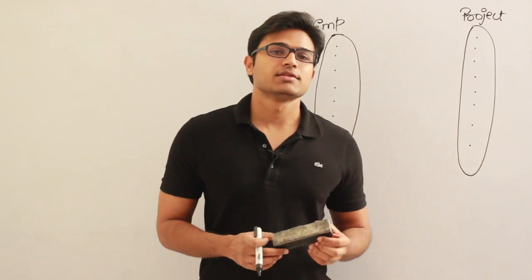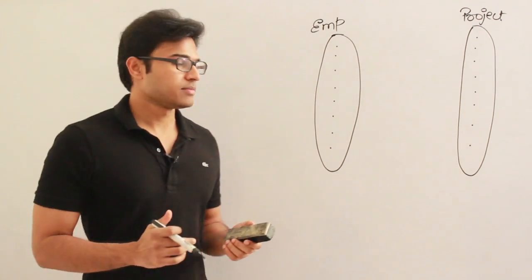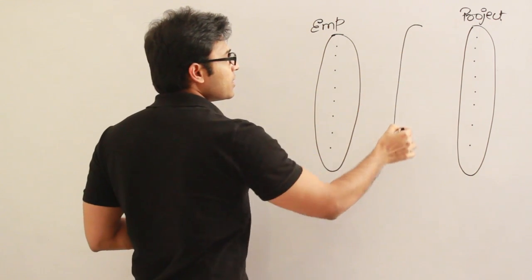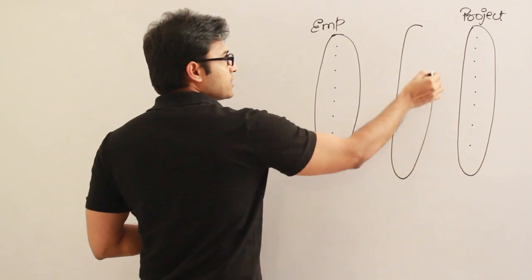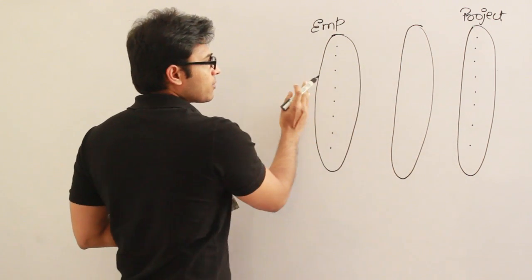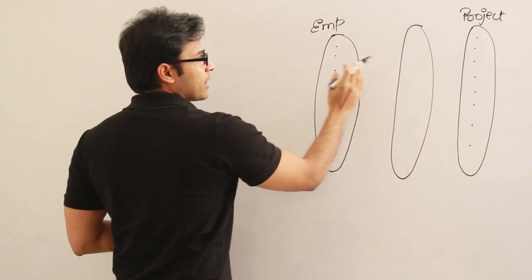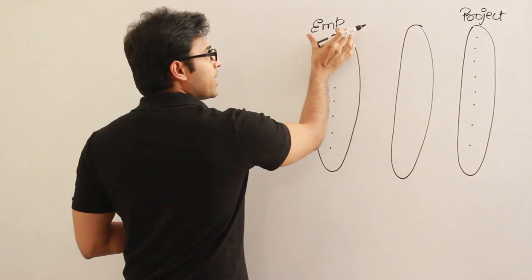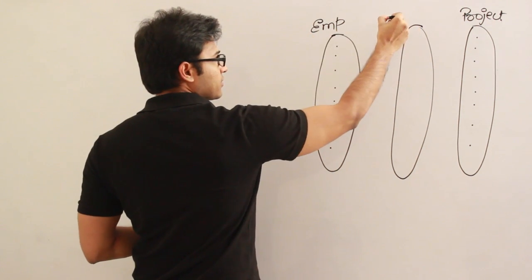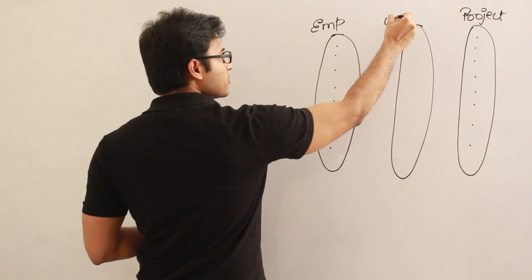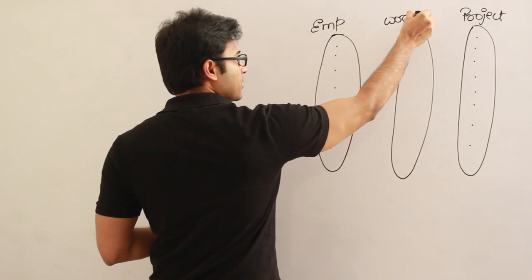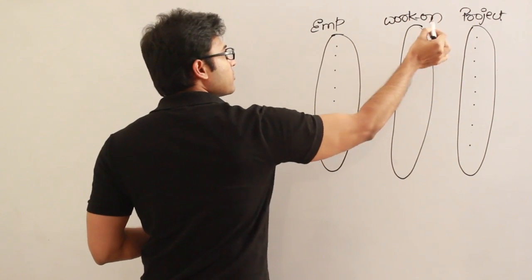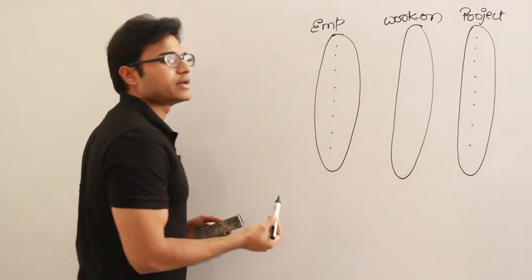Now let's define a relationship and choose a meaningful name. Since we have employee on one side and project on the other, let us say the name is 'employee works on project.' That looks meaningful — employee works on project.